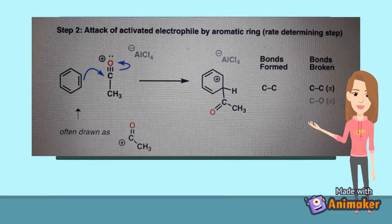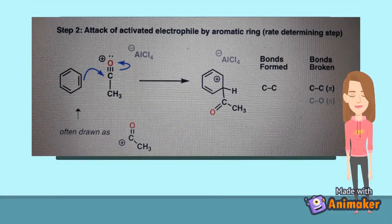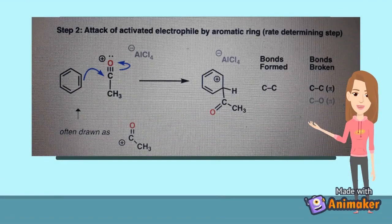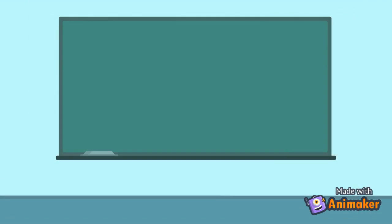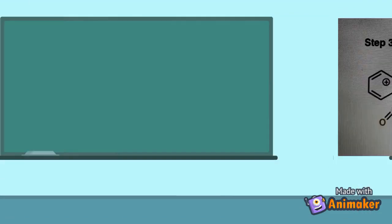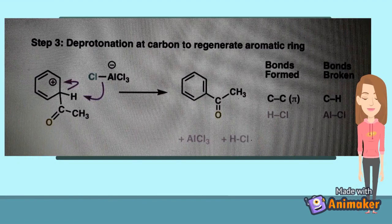Step 2: Attack on activated electrophile. Once the acylium ion is formed, it is attacked by the aromatic ring. Third and final step: deprotonation at carbon to regenerate the aromatic ring.